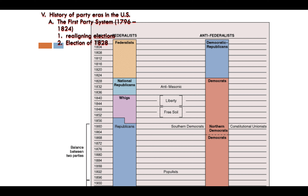When you look at the parties under the Federalist side and the Anti-Federalist side, the Federalist side always represents the more wealthy elite people in society, whereas the Anti-Federalists represent the more common folk in society. We'll explain that as we go along, but we're just going to go over some basics today with the party eras. This first party system lasts from about 1796, early after the Constitution's ratified and George Washington's first term as president.